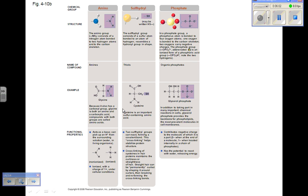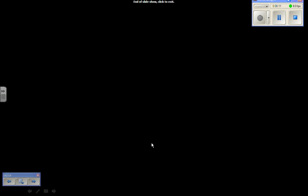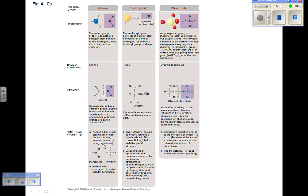Amino groups are found on amino acids. They confer basic properties, picking up hydrogen ions from the surrounding solution.